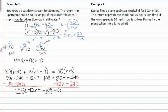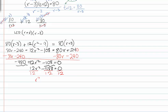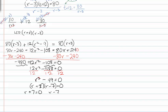This gives us negative four eighty plus twelve r squared minus one oh eight equals zero. Rearranging and adding like terms gives us twelve r squared minus five eighty eight equals zero. Dividing both terms by twelve gives r squared minus forty nine equals zero. Factoring, we get r plus seven times r minus seven equals zero, so r equals negative seven or r equals positive seven. Since we can't have a negative rate, r equals seven.